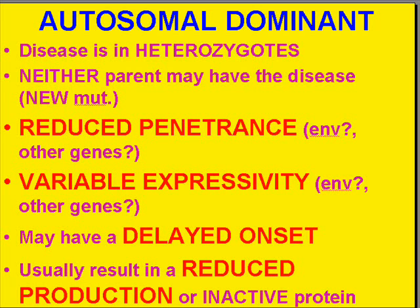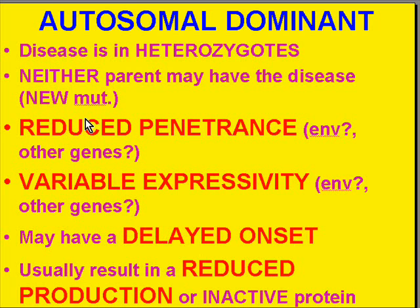Whether this reduced penetrance is due to environment or the presence of other genes is not really clear. Compared to the next group — autosomal recessive — all four of these conditions are generally the opposite. Autosomal dominant diseases also have a very variable expressivity; the disease is very non-uniform in patients who have it. They very often have a delayed onset where it may not appear until later in life. Autosomal dominant polycystic kidney disease is a classical example of this. In autosomal dominant diseases there's usually a reduced production or an inactive protein.